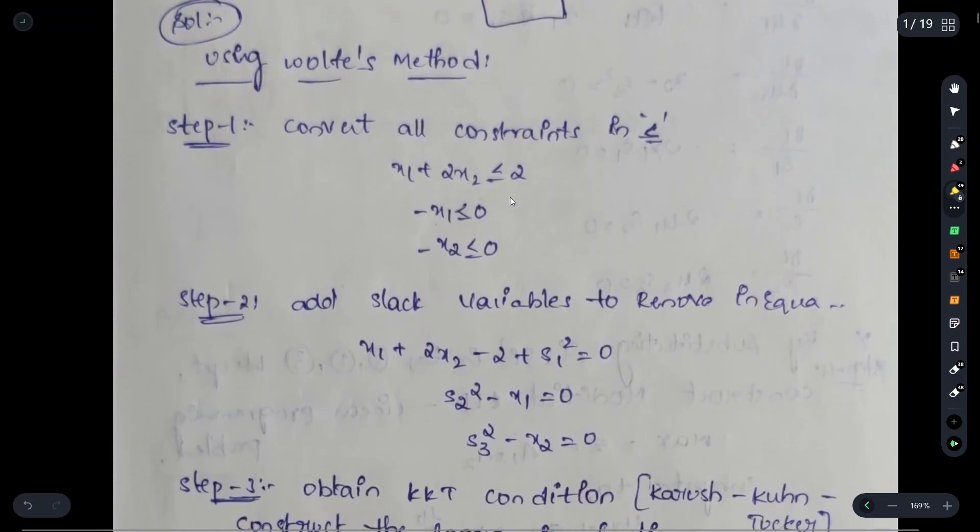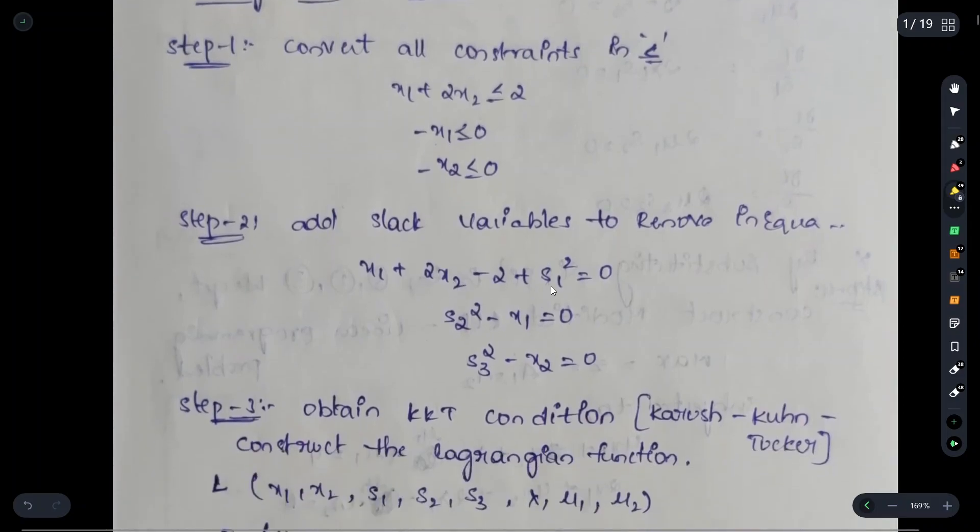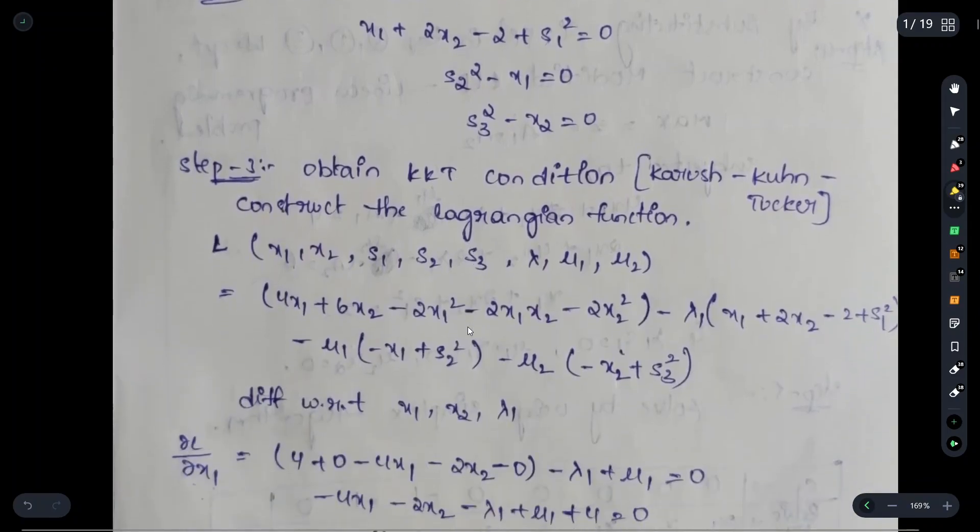Here we can see x1 plus 2x2, we take 2 to this side and make it x1 plus 2x2 minus 2 equals slack variable s1 square. We consider 3 slack variables: s1 square, s2 square, s3 square for each equation. That is step 2.